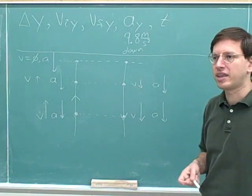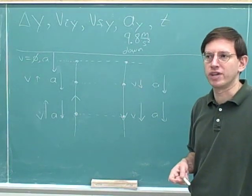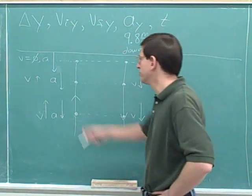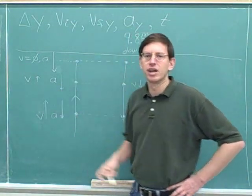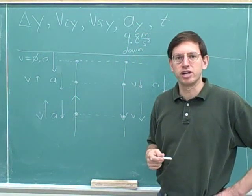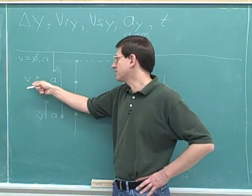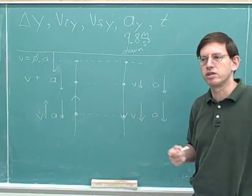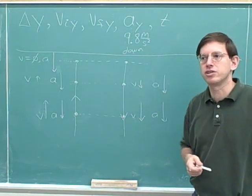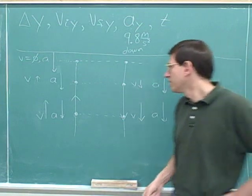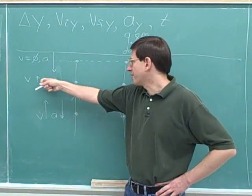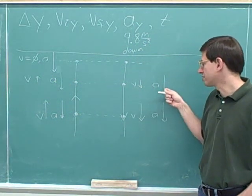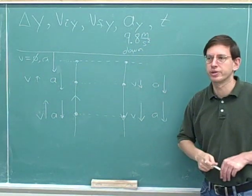The acceleration doesn't tell you which way you're moving — when we were moving up, the acceleration was still down. But the velocity tells you which way you're moving: when we were moving up, the velocity was up, and when we were moving down, the velocity was down. The acceleration just tells you whether you're speeding up or slowing down. Over here the acceleration is anti-parallel to the velocity, so we're slowing down. Over here the acceleration is parallel to the velocity, so we're speeding up.